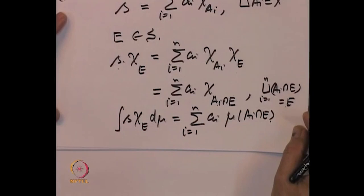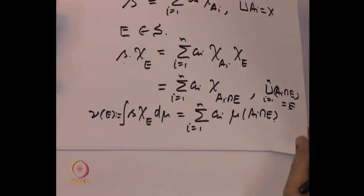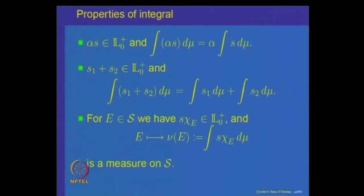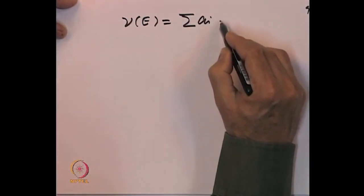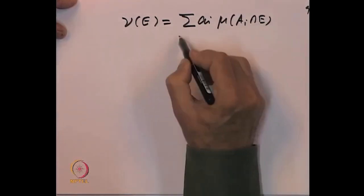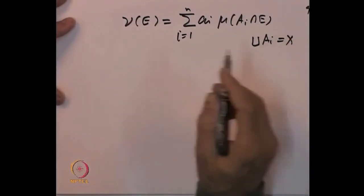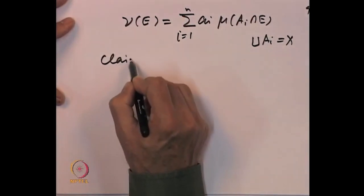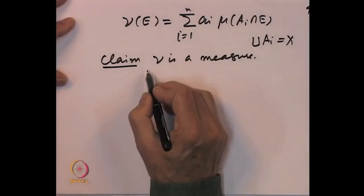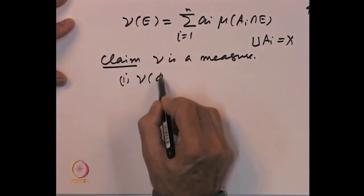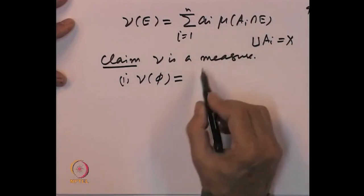We want to prove that nu(E) defined as the integral of S chi_E d mu is actually a measure on S. First, nu(empty set) = sigma a_i mu(A_i ∩ empty set) = 0. For countable additivity, let E = disjoint union of E_j, j = 1 to infinity. We must show nu(E) = sigma nu(E_j).